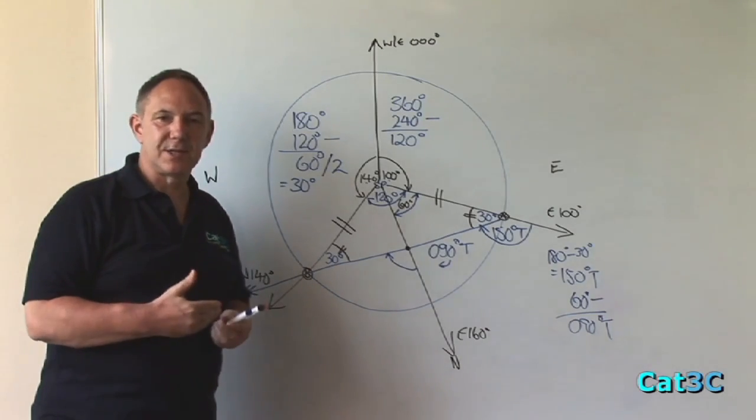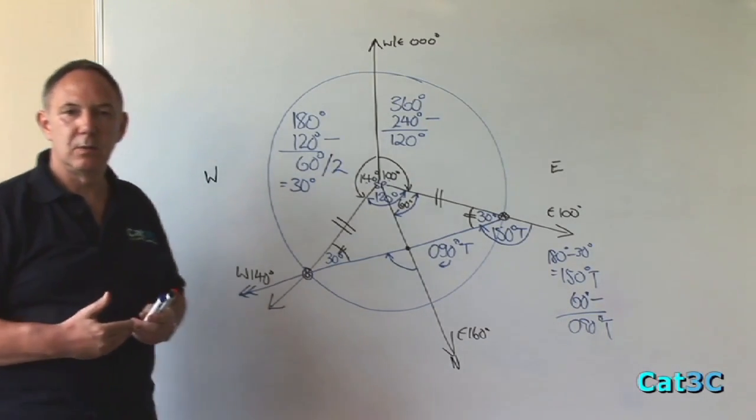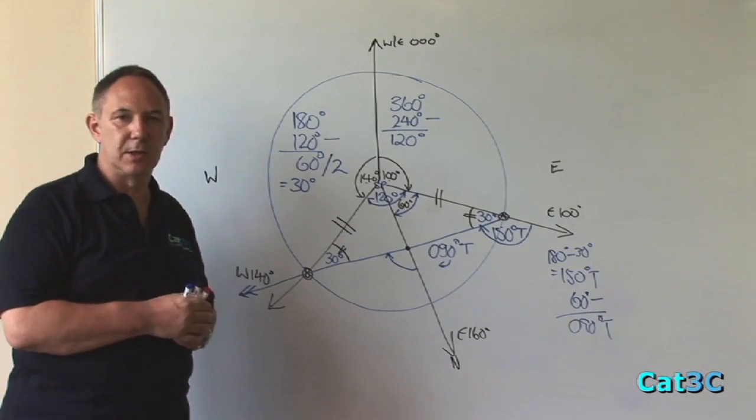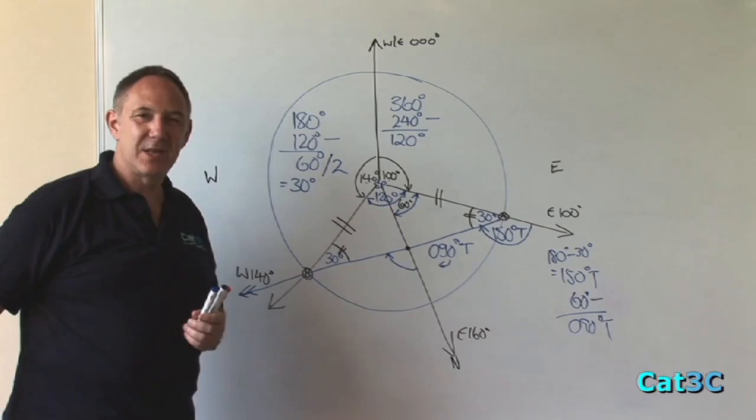That narrows our optional answers down to A and B. We have only two answers that include 90 degrees true as an option. What we have to find now is the grid track.